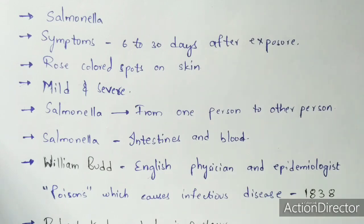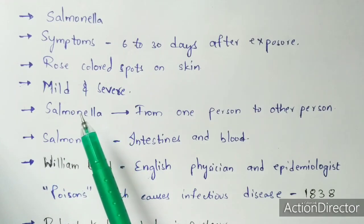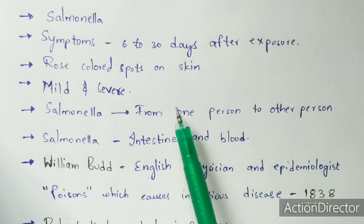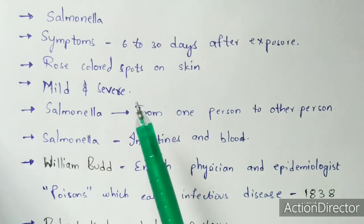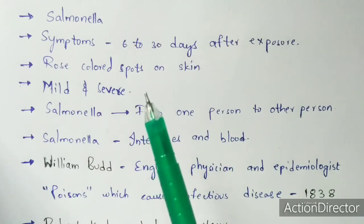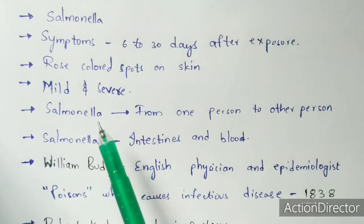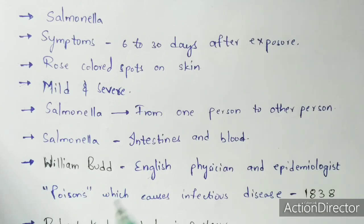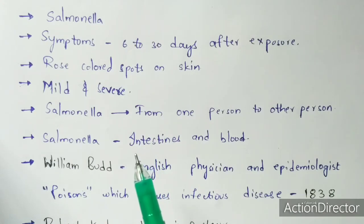Salmonella can be transmitted from one person to another, so typhoid fever is a transmission disease. To avoid transmission, treatment should be sought as soon as possible. The Salmonella attacks the blood, and since blood passes through all parts of the body, it affects most in the small intestine. When you get infected, you will immediately experience vomiting because Salmonella primarily affects the intestine.